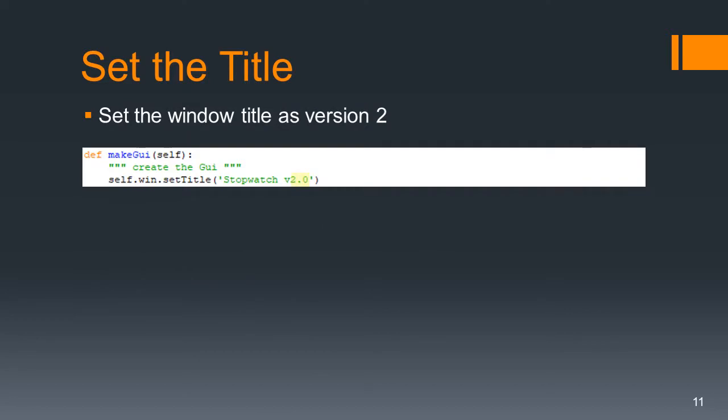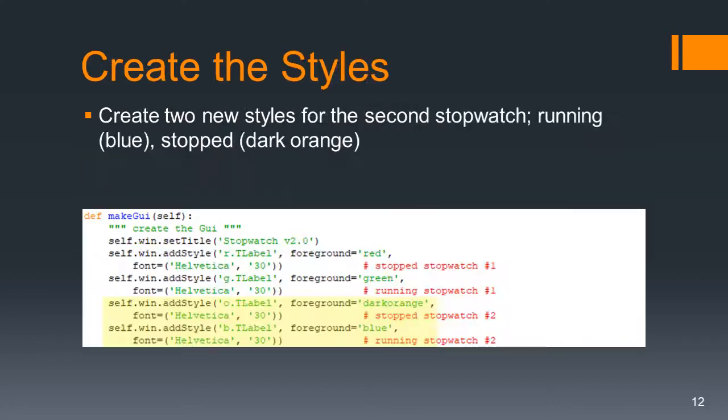The title is basically the same as before, but we're going to call it Stopwatch Version Two. Here's where we create our styles — we have our red and green style, unchanged, but we're going to have two new styles. The foreground is going to be dark orange or blue, depending on whether it's stopped or running. Feel free to use your own colors here.